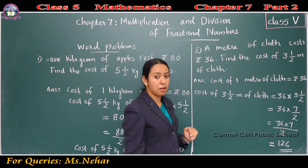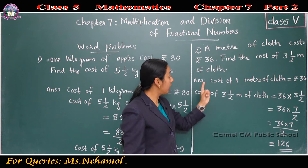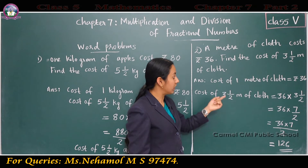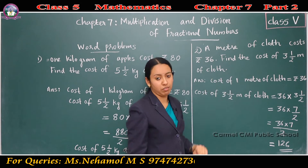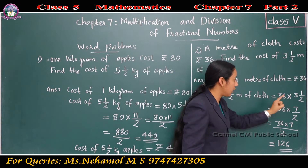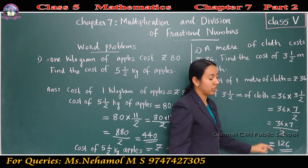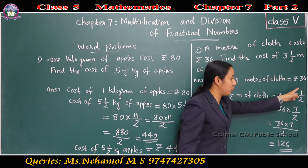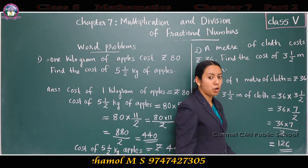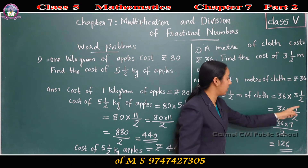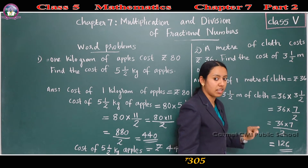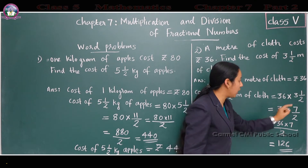How can we find it? Multiply the cost of 1 meter of cloth by 3½. That means 36 into 3½. 3½ is a mixed fraction, so convert it to an improper fraction. 2 threes are 6, plus 1 is 7. So 7/2.